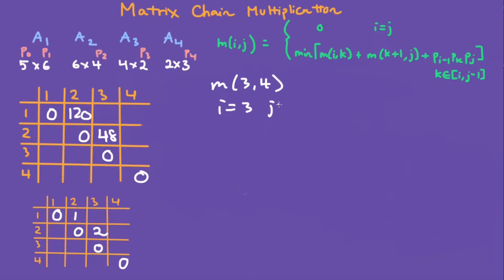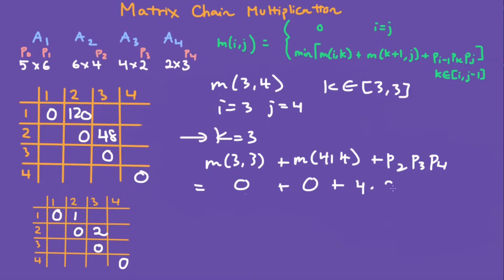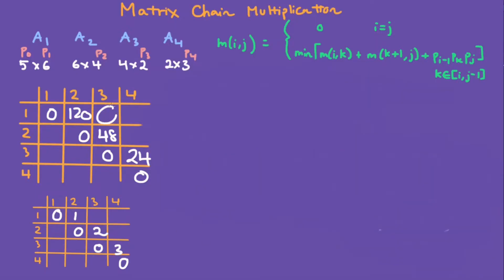Now for m[3,4]: i is 3, j is 4, and k goes from 3 to 3. When k is 3, we have m[3,3] plus m[4,4] plus p2 * p3 * p4. That's 0 plus 0 plus p2 is 4, p3 is 2, p4 is 3 — giving 24. The loop has finished, and k is 3.